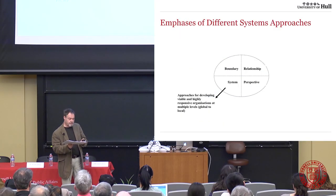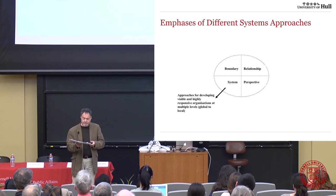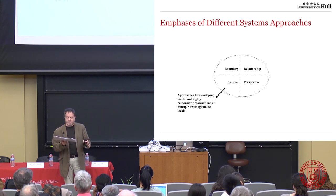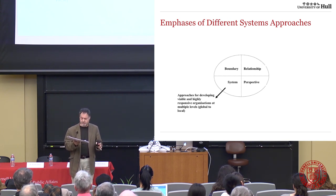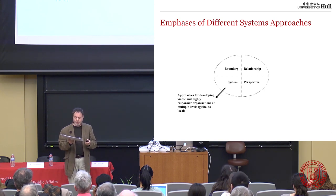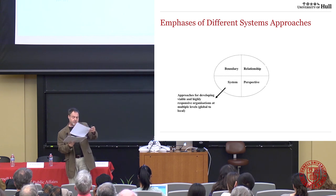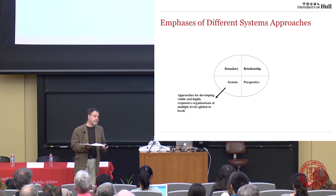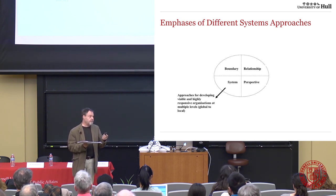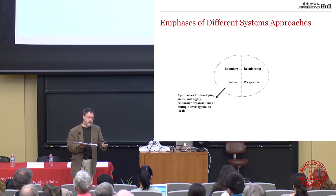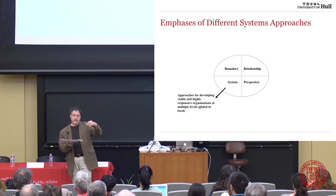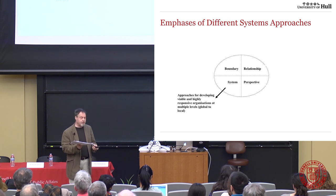Now let's move to the third approach. There's been a lot of research on thinking in terms of whole systems, including ecosystem dynamics, but I want to focus on organisational systems. The approach comes from an author called Stafford Beer and is called the Viable System Model. It offers a way either to diagnose problems in an organisation or to help design an organisation from scratch, and it's a multi-scale model, so you can have organisations within organisations.